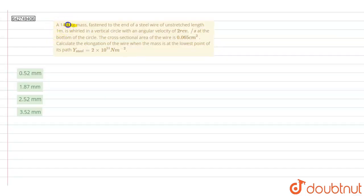A 14.5 kg mass fastened to the end of a steel wire of unstretched length 1 meter is whirled in a vertical circle with angular velocity of 2 revolutions per second at the bottom of the circle. The cross sectional area of the wire is 0.065 centimeter square. Calculate the elongation of wire when the mass is at the lowest point of its path. Young's modulus of the steel wire is 2 into 10 to the 11 newton per meter square.